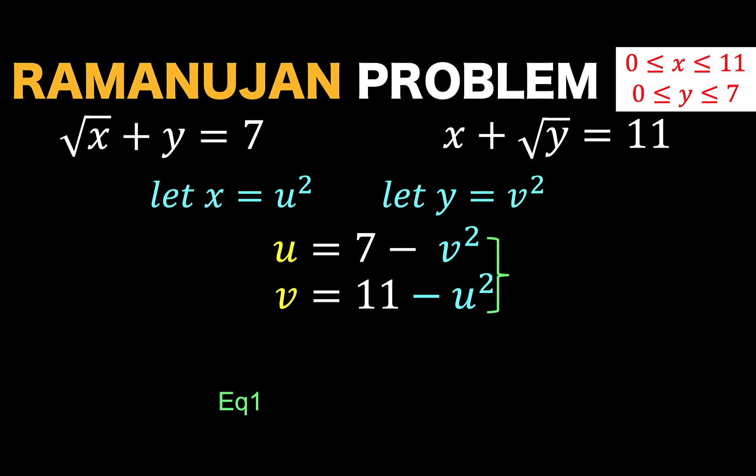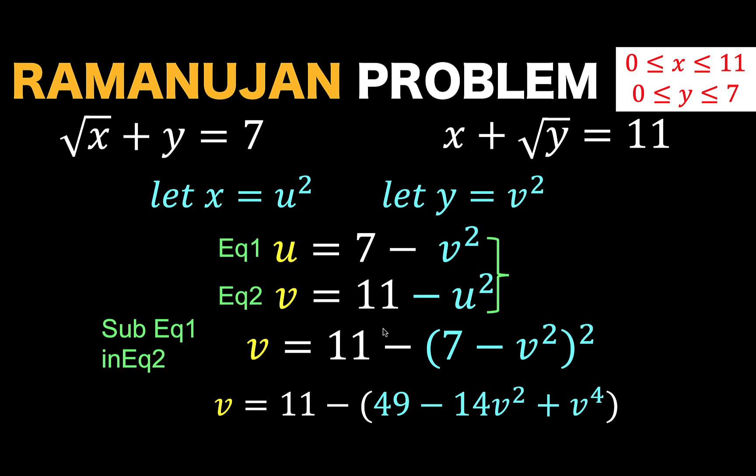Let's consider this system of equation. Let's call the first one as equation 1. The second as equation 2. And let's substitute equation 1 in equation 2 to arrive at v equals 11. Instead of minus u squared, we have minus the value of u in first equation, the quantity 7 minus v squared, that's the value of u, raised to the second power. From here, everything is algebraic manipulation. So, let's simplify. v equals 11 minus the square of this binomial is expanded as 49 minus 14v squared plus v to the fourth.